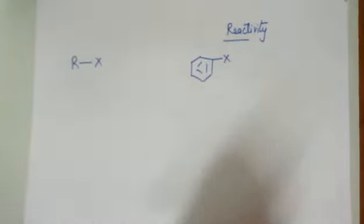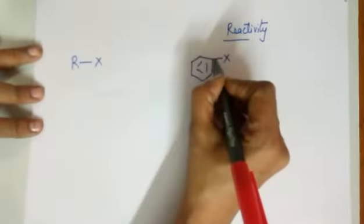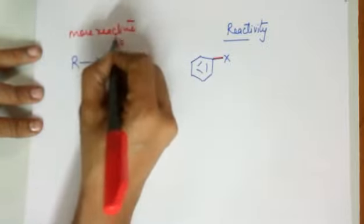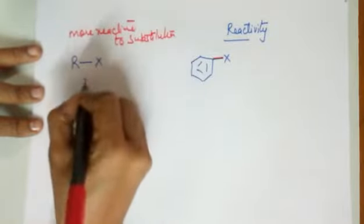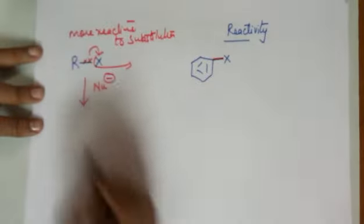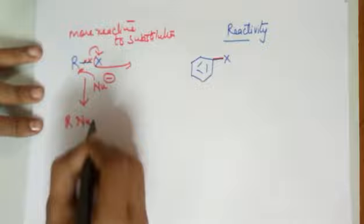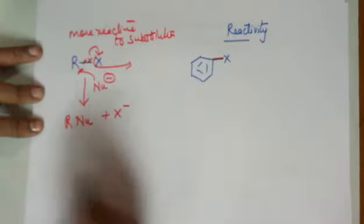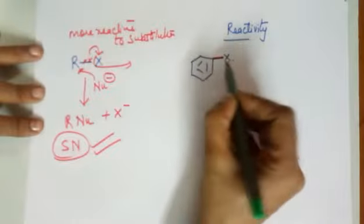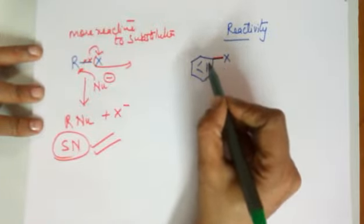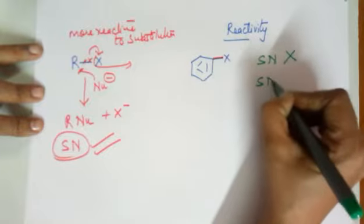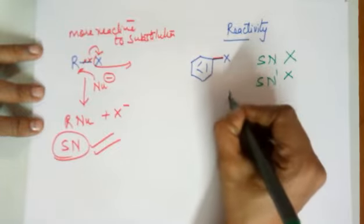Coming to reactivity: in alkyl halide the C-X bond is weaker, making it more reactive towards substitution. When a nucleophile attacks, X takes away the electrons and leaves as X⁻, and the nucleophile attacks the carbon — giving product R-Nu with X⁻ leaving. So SN reactions are a property of alkyl halides. In haloarenes, the C-X bond will not cleave easily because the phenyl carbocation is unstable and does not form, so X does not easily leave and SN reactions are not possible.